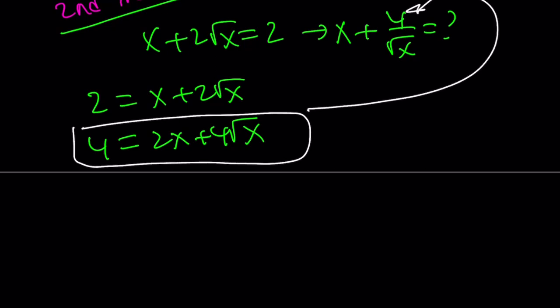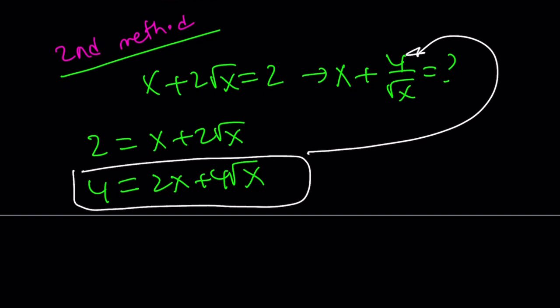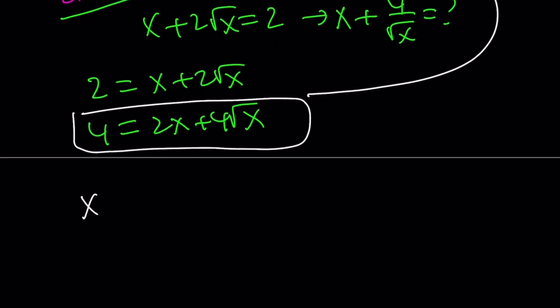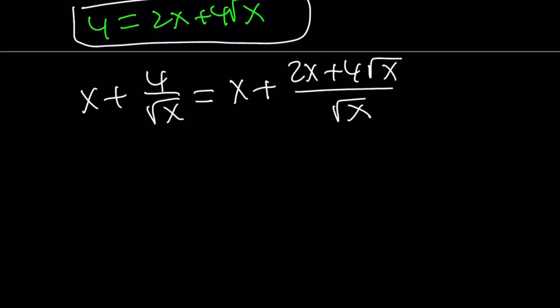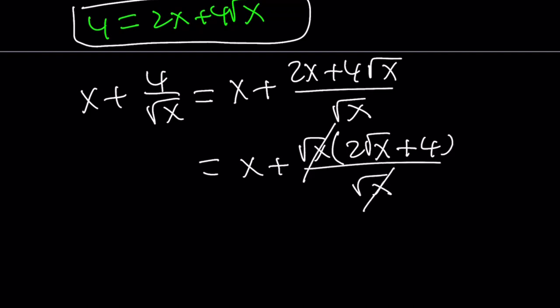I'm going to go ahead and substitute that here. Make sense? Because in the expression that we're trying to evaluate, we have a 4. So most of the time we replace variables with numbers, but this time we're going to do the opposite. So x plus 4 over square root of x equals x plus, we're going to replace the 4 with 2x plus 4 root x. And then the square root of x is going to stay the same. And let's go ahead and simplify this. To simplify this, I'm going to factor out a square root of x in the numerator. That gives us 2 times the square root of x plus 4. And that is divided by square root of x. Square root of x cancels out. Nice.